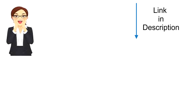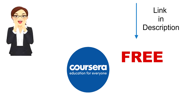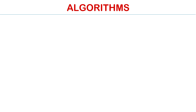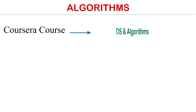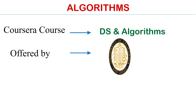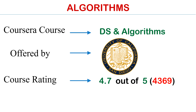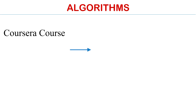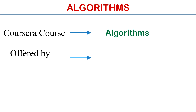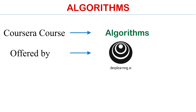Today's video follows a curated list of highly rated and enrolled courses at Coursera — all available for free. Course number one is Data Structures and Algorithms, offered by the University of California. The rating of this course is 4.7 out of 5, and the price is absolutely free. You don't need to pay anything; the link will be in the description box.